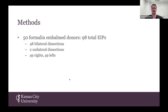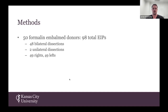For our specimens, we were able to use 50 formalin-embalmed cadavers for a total of 98 extensor indices. 48 of these were bilateral, and there were two donors for whom we were only able to use one side, resulting in unilateral dissections. We had 49 from the right and 49 from the left, respectively.